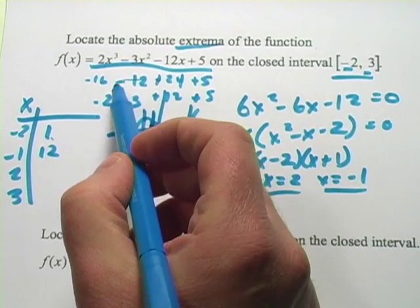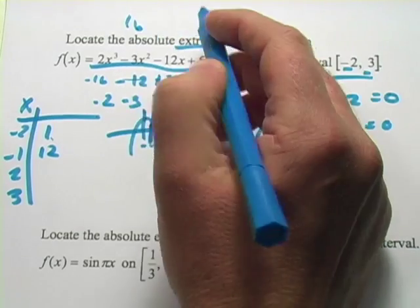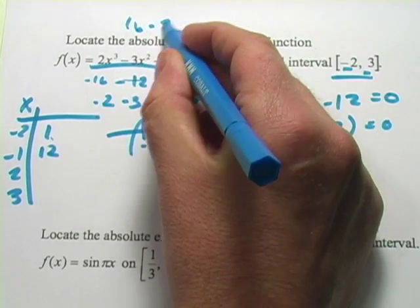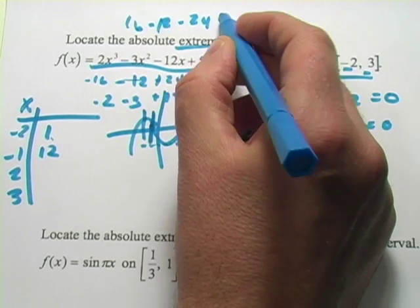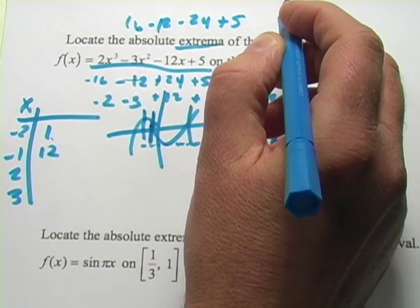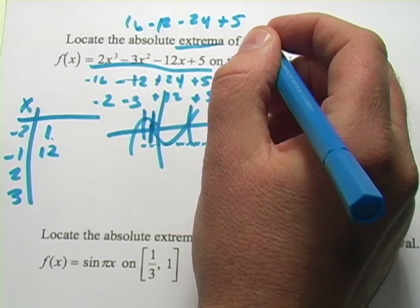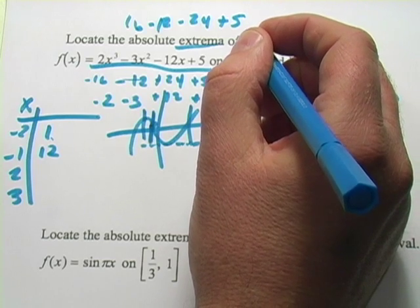And we put a two in there. We've got 16 - 12 - 24 + 5. That looks like negative 15.